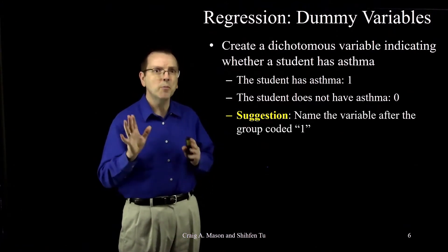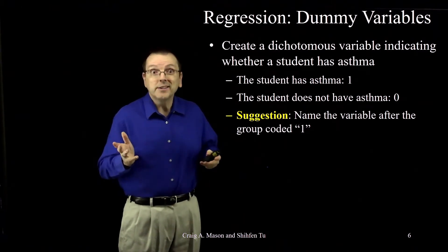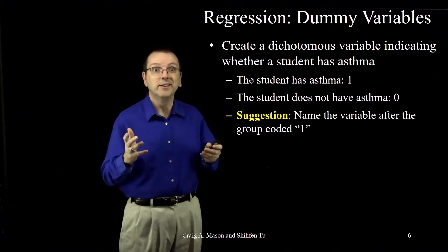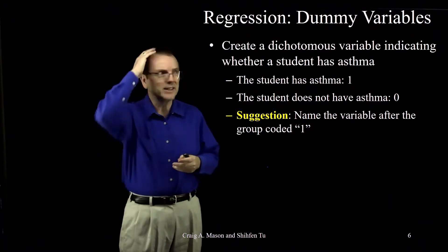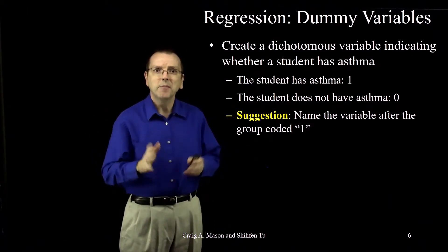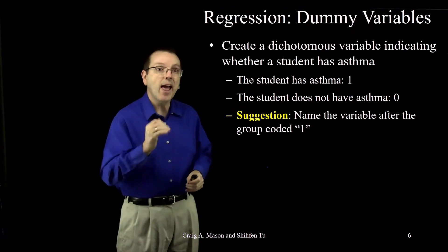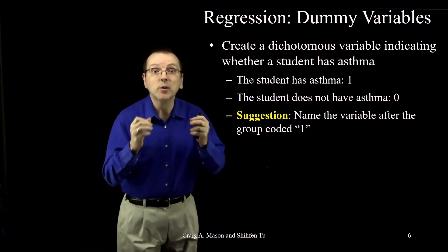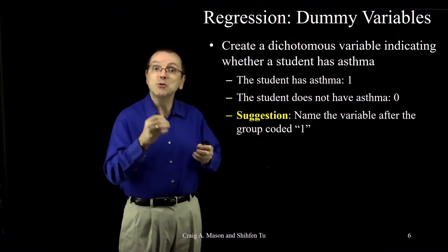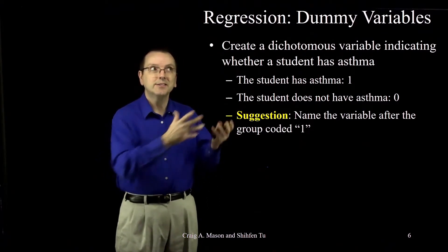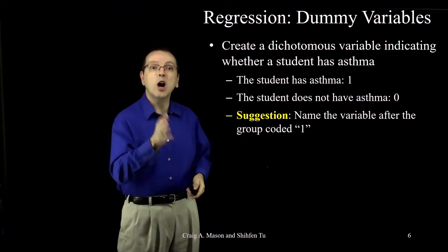As we'll see in a moment, this variable will represent the effect of having asthma. I could call it 'dummy one' or 'D one' or 'Fred and Ethel' if I wanted, but six months later I may have forgotten what it was. Naming it after the group coded one lets you know exactly what the variable is measuring and exactly how it was coded — no guessing, it's all very clear.